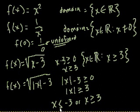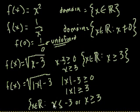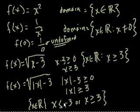So x has to be less than negative 3 or x has to be greater than positive 3. So the domain is x is a member of the reals such that x is less than or equal to negative 3 or x is greater than or equal to 3.